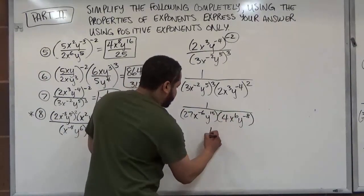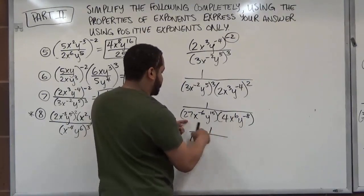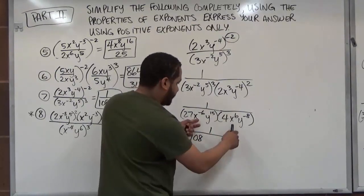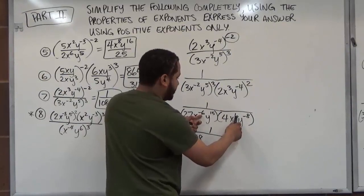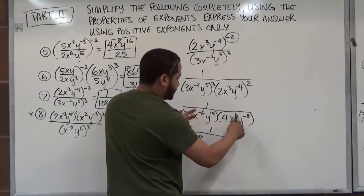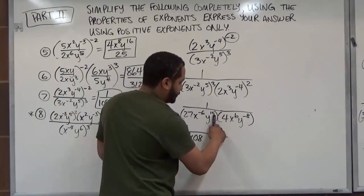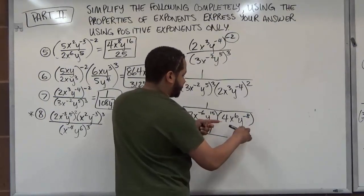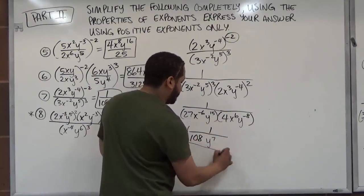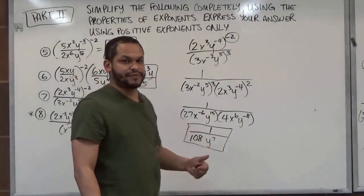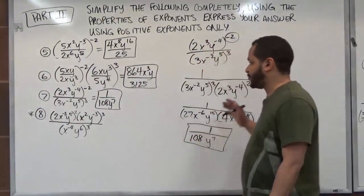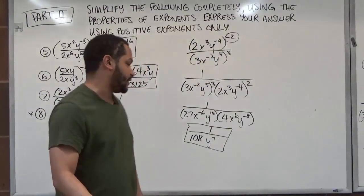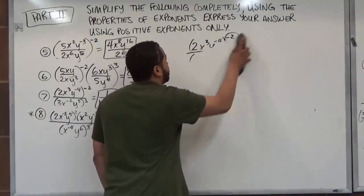Let's multiply what we have: 1 over 108 — 27 times 4: 25 times 4 is 100, add 2 times 4 which is 8, so 100 plus 8 is 108. x to the negative 6 times x to the 6: these cancel since negative 6 plus 6 is 0, and anything to the power of 0 is 1. Then y to the 15th times y to the negative eighth: we add 15 plus negative 8, they subtract and we get y to the seventh power. We can see how well using the properties of exponents helps — it just depends what road you choose to take. Let's get on to the next and final problem.